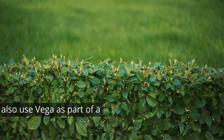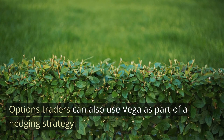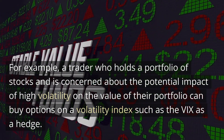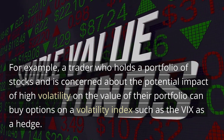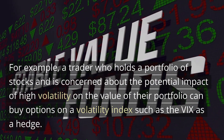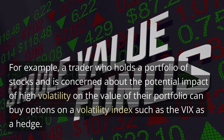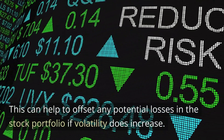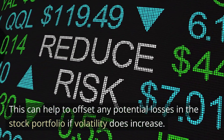Options traders can also use VEGA as part of a hedging strategy. For example, a trader who holds a portfolio of stocks and is concerned about the potential impact of high volatility on the value of their portfolio can buy options on a volatility index such as the VIX as a hedge. This can help to offset any potential losses in the stock portfolio if volatility does increase.